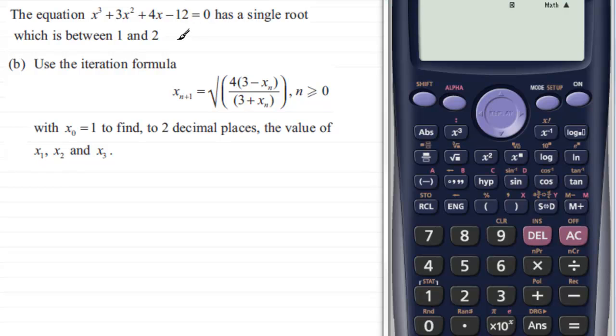which is between 1 and 2. We've got to use the iteration formula x_{n+1} equals the square root of [4(3 - x_n)] / (3 + x_n)